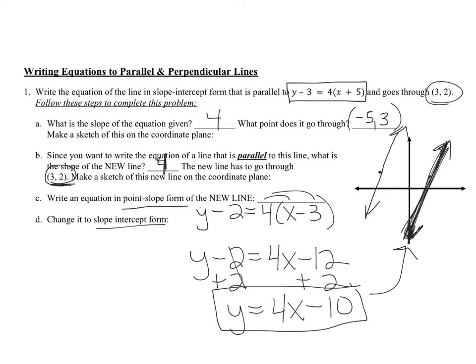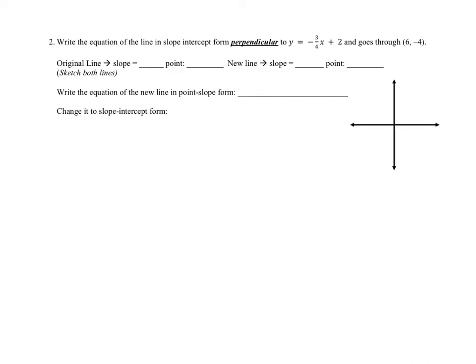To double-check, plug in the ordered pair (3, 2): 4 times 3 is 12, and 12 minus 10 is 2 — that's the y-value we wanted, so it works. For the next example, write the equation of a line in slope-intercept form that is perpendicular to the given equation and goes through (6, negative 4). The original line is in slope-intercept form, so its slope is negative 3/4.